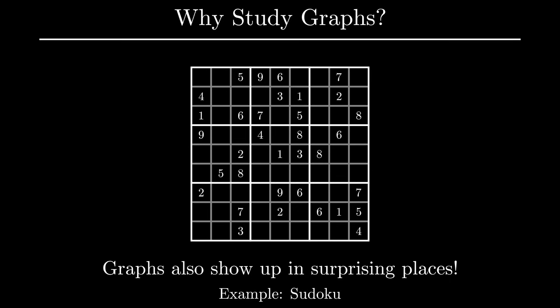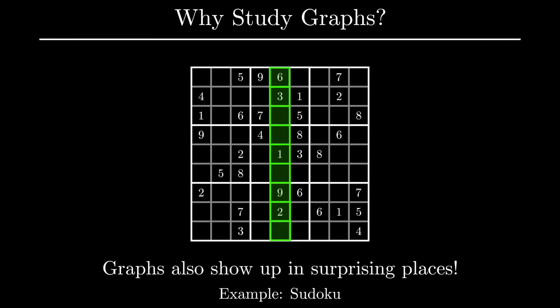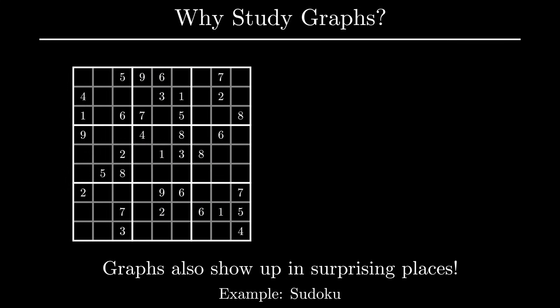The goal of Sudoku is to fill missing entries of a 9x9 grid with numbers 1 through 9, but with a few constraints. The first constraint is that each 3x3 subgrid cannot have repeated numbers. The next constraint is that each row must have unique entries, and the last constraint puts a similar limitation on columns in which all entries of a column must be unique. It turns out that computers can solve Sudoku puzzles efficiently using graph theory. The graph here is quite subtle, but it does exist.